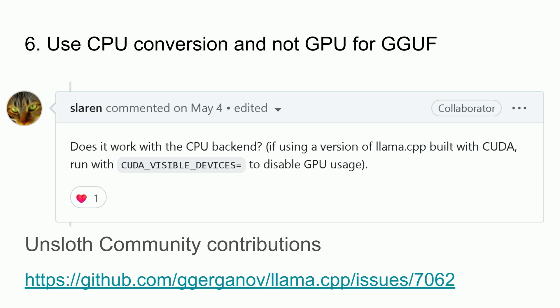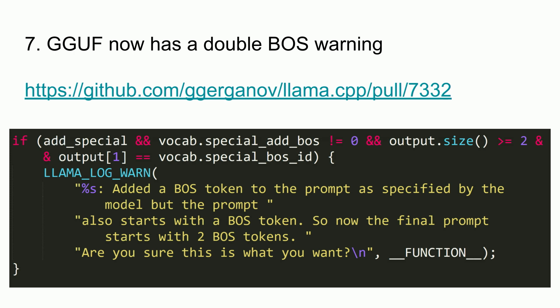There are also some community contributions for Llama 3 bugs. First, someone noticed you can only use CPU conversion, not GPU conversion, when converting to GGUF or llama.cpp — be careful there, because float16 precision differs between GPU and CPU. Second, through our community contribution, llama.cpp now has a warning telling you when you're using double BOS tokens, so please heed that warning during inference.